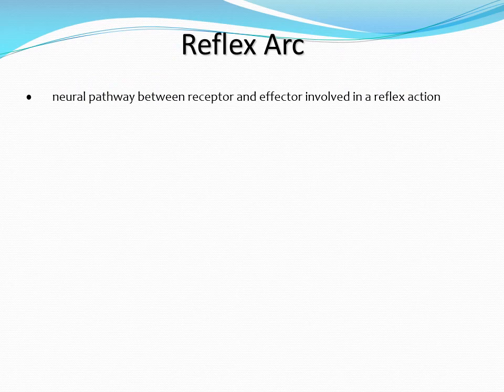Now there is a new terminology: reflex arc. Previously we discussed that a stimulus is detected by the sense organ, which passes the message to sensory neurons, which carry it to the central nervous system, and whatever the central nervous system orders is conveyed through motor neurons to the effectors — muscles and glands. These are voluntary actions under the control of our central nervous system and our own will. But there are some actions which occur immediately and quickly — these involve what is called a reflex arc, which is a neural pathway between the receptor and the effector involved in a reflex action.